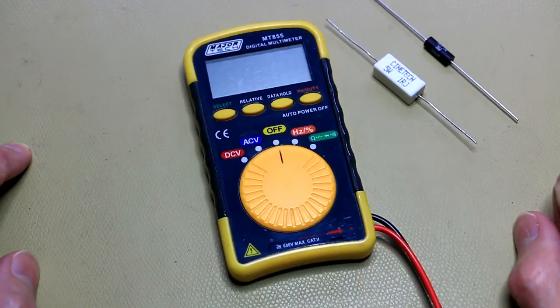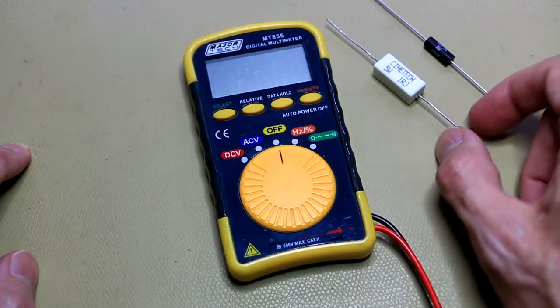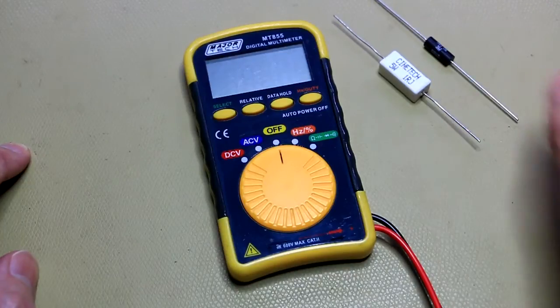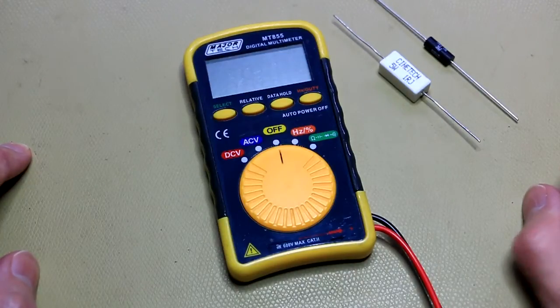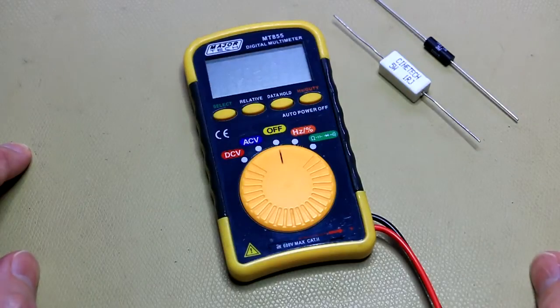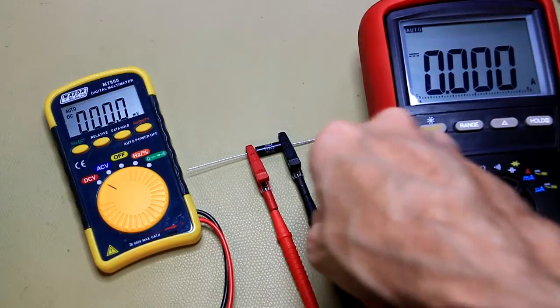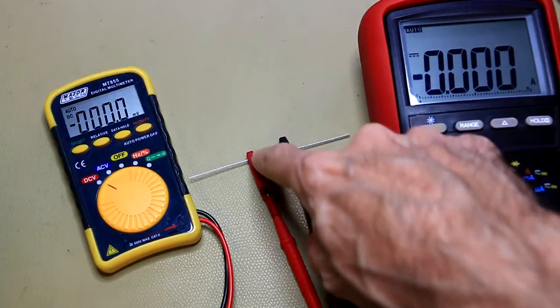Using a value like this one ohm, you can measure milliamps, but of course then your burden voltage is quite high. All right, so here I've got the 0.1 ohm resistor hooked up to the multimeter.